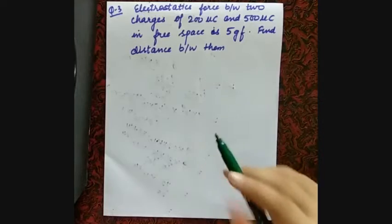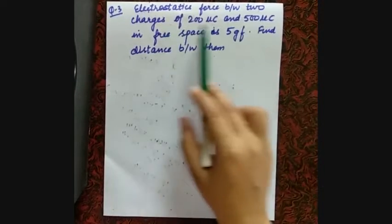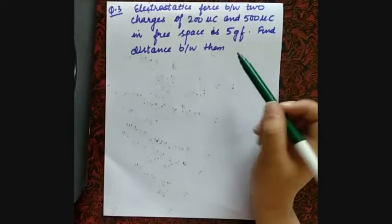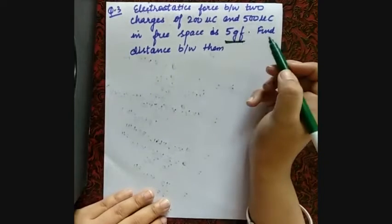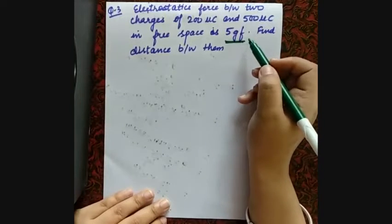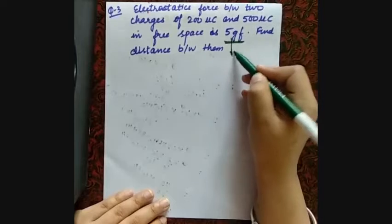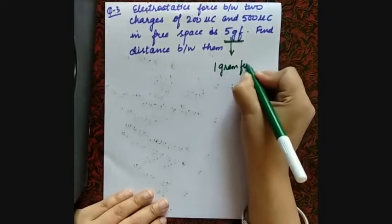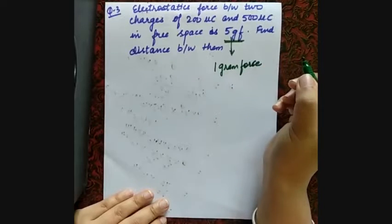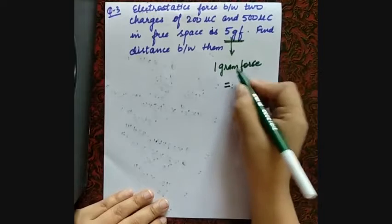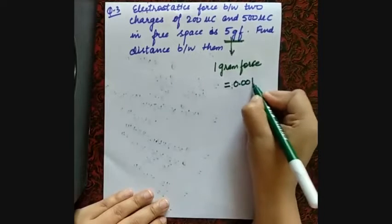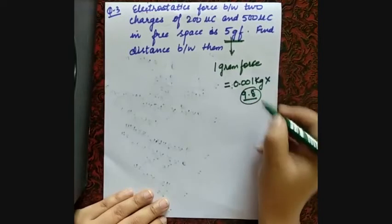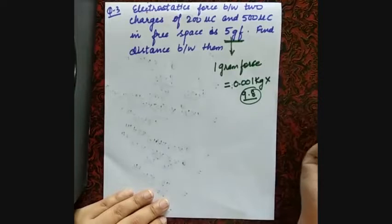Question number three: the electrostatic force between two charges in free space is given as 5 gram-force. Find the distance between them. First, let's understand gram-force: 1 gram-force = 1 gram converted to kilograms, multiplied by g (9.8 m/s², sometimes taken as 10). So the gram-force unit converts to Newtons using g.